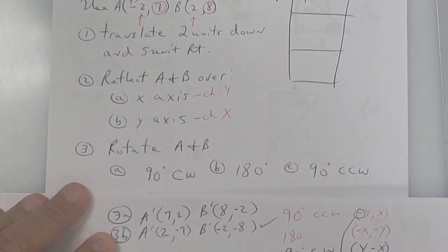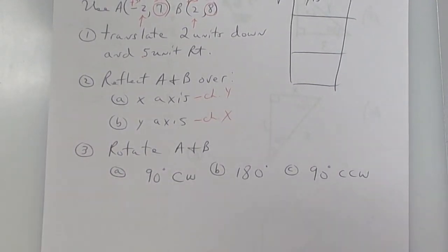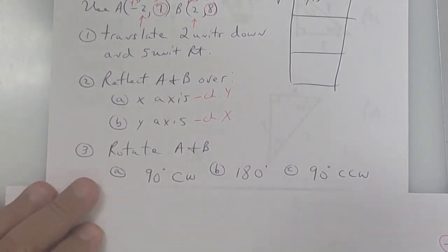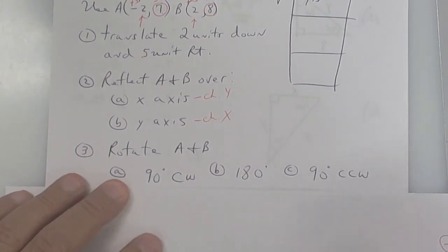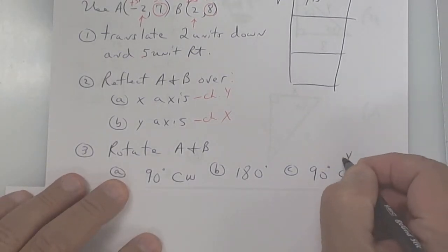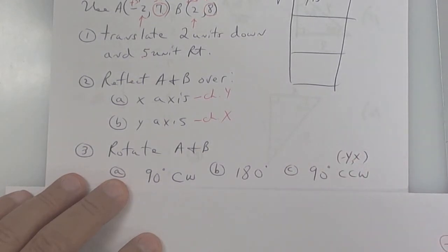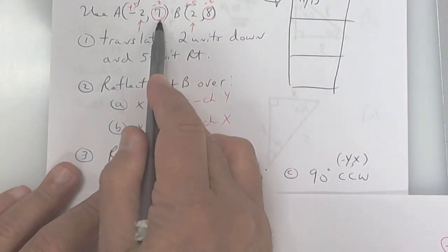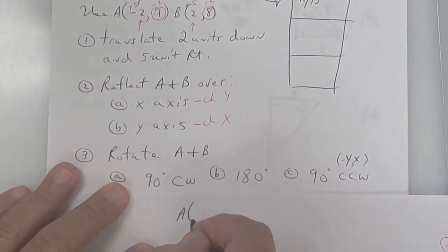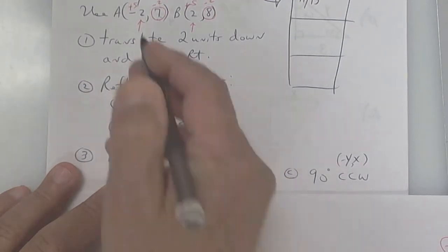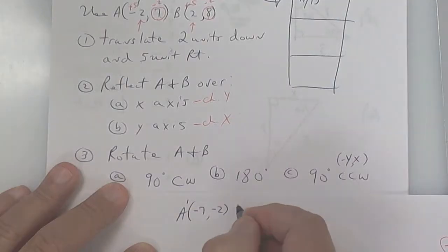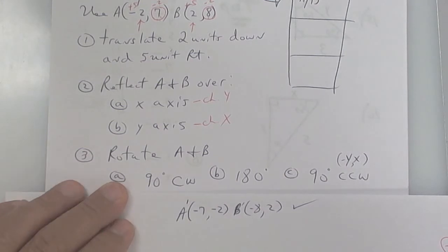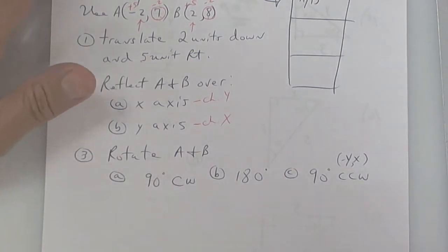Finally, 90 degrees counterclockwise: switch them and change the y. Change the y first — that becomes negative 7, and negative 2 stays. B prime: this becomes negative 8 and 2. That's it — it's really pretty easy. Put away your bell work.